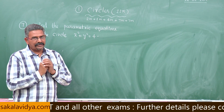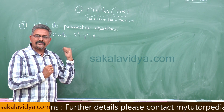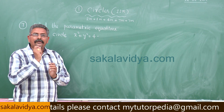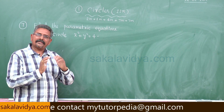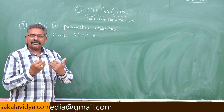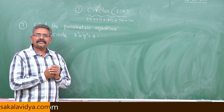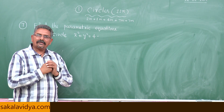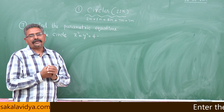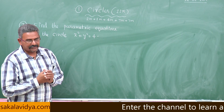In order to find the parametric equations of the given problem, we need to find out the radius of the circle — that is enough. Once we get the radius, we use the formula x equals r cosθ and y equals r sinθ to write the parametric equations.